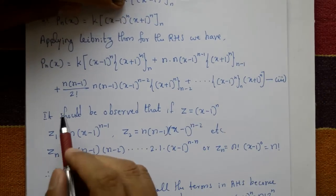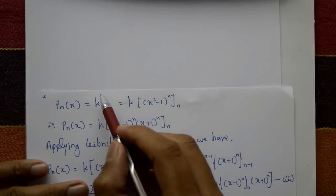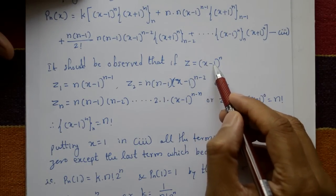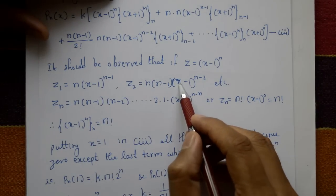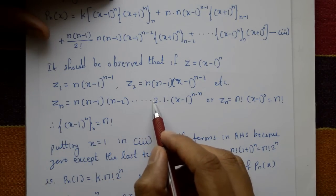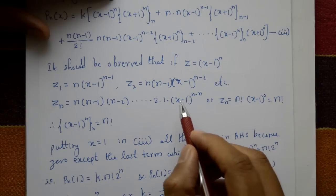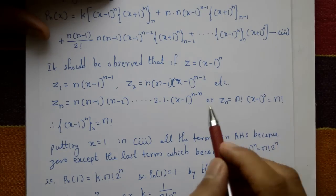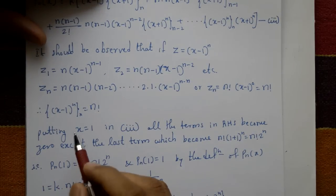To find the constant k, let z = (x - 1)^n. Differentiating: z₁ = n(x-1)^(n-1), z₂ = n(n-1)(x-1)^(n-2), and so on. The last term z_n = n(n-1)(n-2)···3·2·1 · (x-1)^0 = n! · 1 = n!. So the nth derivative of (x-1)^n equals n factorial.